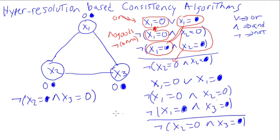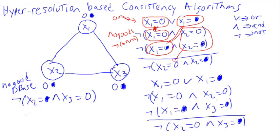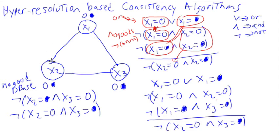The way the hyper-resolution algorithm works is that each node is an agent, and each agent has a no-good database. Initially this contains just the constraints of the problem, but the agents keep applying the hyper-resolution rule to generate more and more no-goods. Once they generate new ones, they send them to neighboring agents as messages. For example, x1 sends its no-goods to x2.